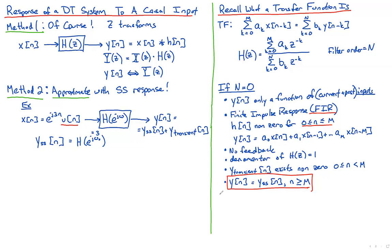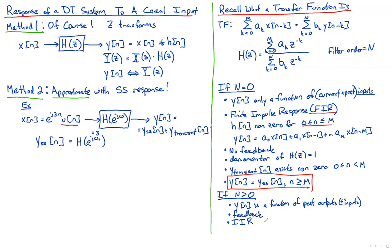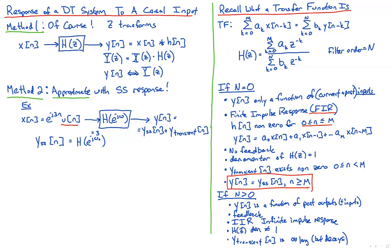This is different from the case when N is greater than zero. When N > 0, the output depends on past outputs as well as inputs — there is feedback — and that makes it an infinite impulse response filter, or IIR. H(z)'s denominator is not equal to one, and the transient portion of the output is infinitely long, though it does decay. There is no point at which the output is exactly equal to the steady-state output, but after an arbitrarily long period of time, it gets arbitrarily close.